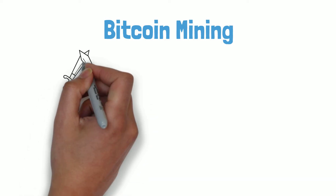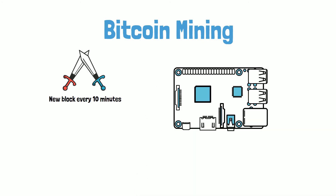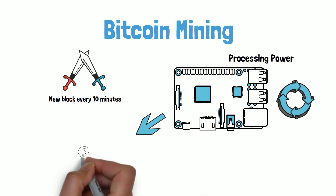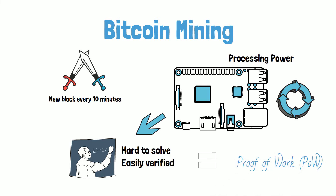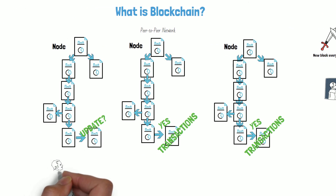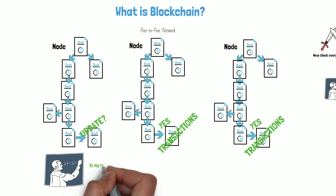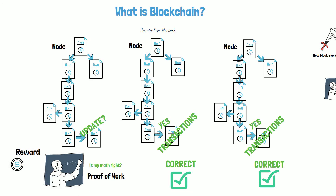Bitcoin eliminates the need for third parties through proof and verification. Nodes compete to be the first to add the new block of transactions every 10 minutes. To commit this new block of transactions, a node expends processing power on solving complicated math problems that are hard to solve but with a solution that's easily verified — this is called proof of work. If a node solves the proof of work, the other nodes vote on its validity. If the node gets the majority of the votes, the new block is added to the chain. The node that gets the math right is rewarded with brand new Bitcoins — this process is called mining, and those who solve the proof of work are called miners.